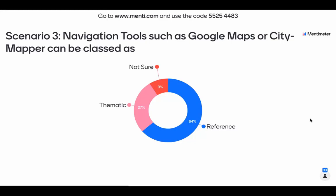Either way, this answer is open to debate, and the difference is between mapping places and mapping data. Thank you for participating in those scenarios — I hope they were useful in distinguishing differences between these types of maps. Now I'd like to draw on a real life example.